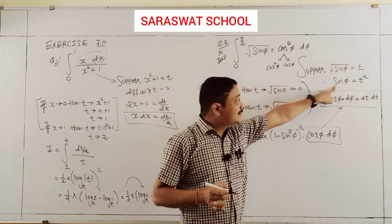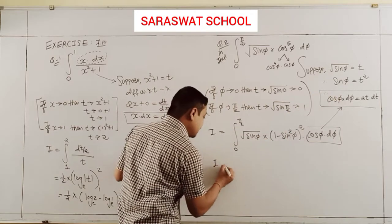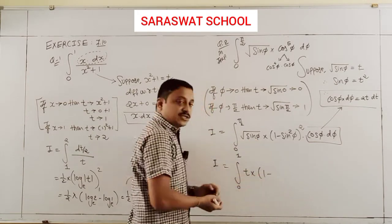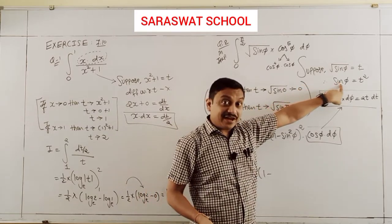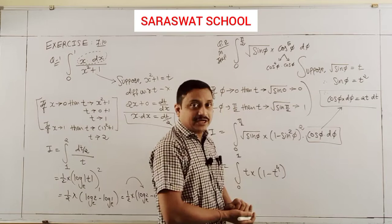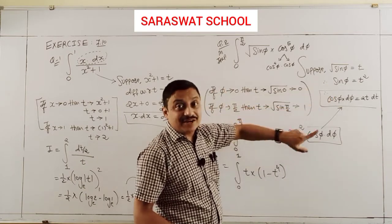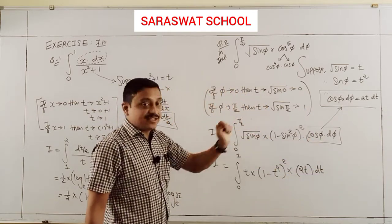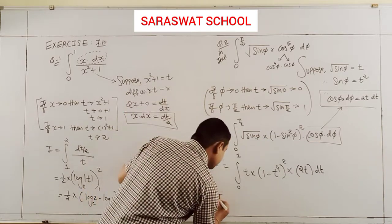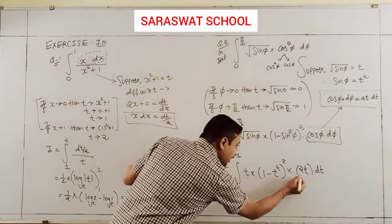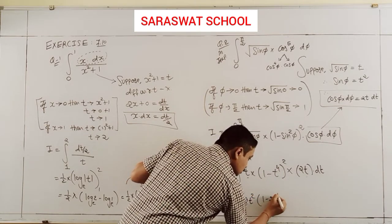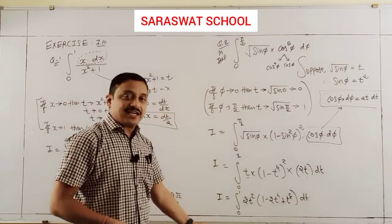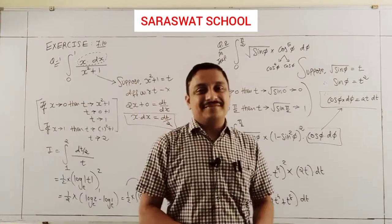After expansion, I = ∫₀¹ (2t² - 4t⁶ + 2t¹⁰) dt. Integrating: 2t³/3 - 4t⁷/7 + 2t¹¹/11, limit 0 to 1. Putting 1: 2/3 - 4/7 + 2/11. Taking LCM of 3, 7, 11 which is 231: numerator is 7×11×2 - 3×11×4 + 3×7×2 = 154 - 132 + 42 = 64. Answer is 64/231.